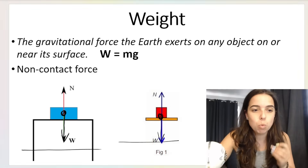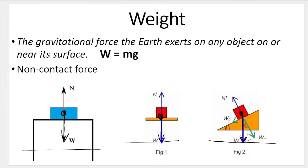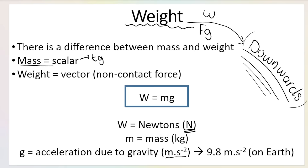A very important thing to take note of when looking at these diagrams is the direction of weight. Weight is the blue arrow and it acts straight down to the ground in all cases — never at a weird angle relative to the surface. The direction for weight is always downwards. Weight is a force, so it's measured in Newtons, and because forces are vectors they need a direction — and downwards will always be your direction for weight.